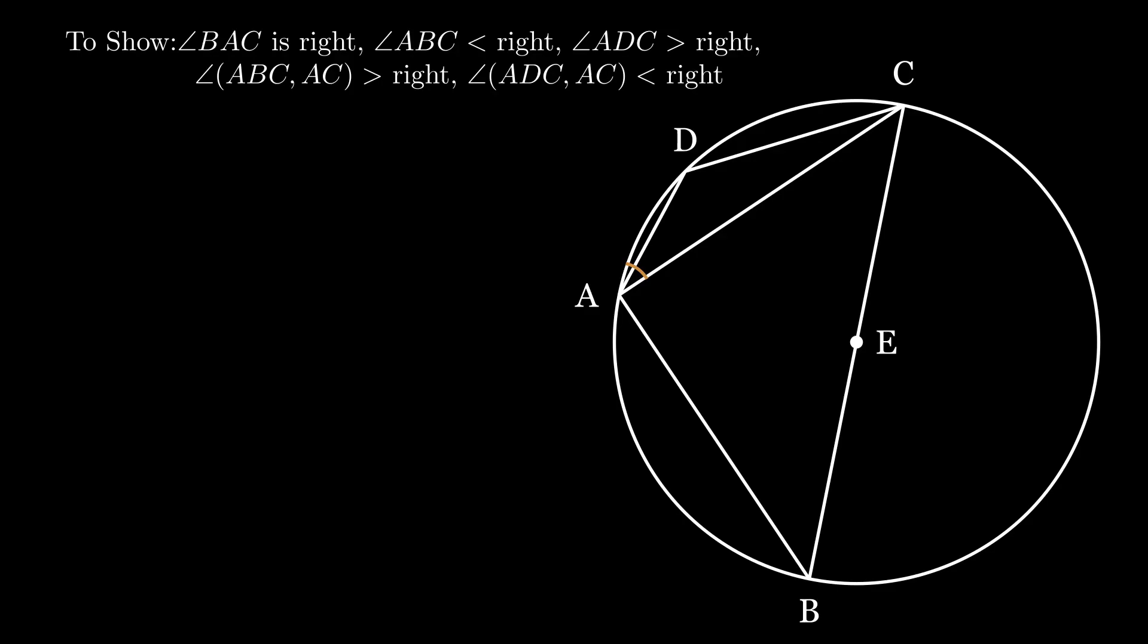For the situation of the angle made by the circumference arc BC and the straight line BC, see proposition 3.16. Let's finally prove things.